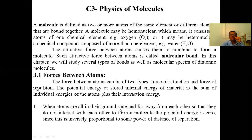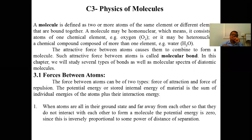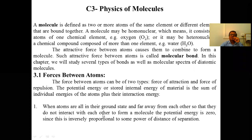When atoms are all in their ground state — meaning all electrons are revolving in their own orbits — and they are far away from each other so they do not interact, the interaction energy is zero. To form a molecule, in this case the potential energy is zero; there is no attractive force, no repulsive force, and no interaction force.